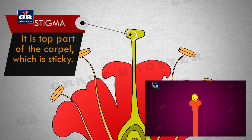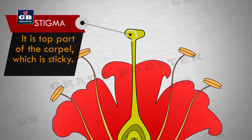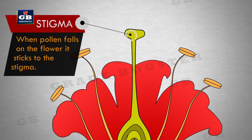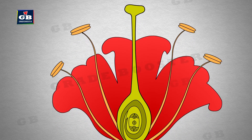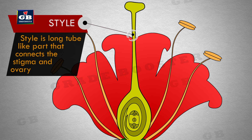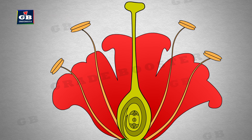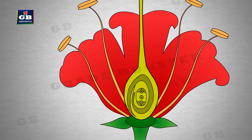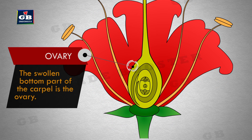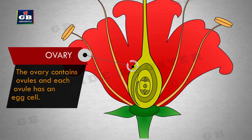The stigma is the top part of the carpel, which is sticky. The ovary is the swollen bottom part of the carpel. The ovary contains ovules and each ovule has an egg cell.